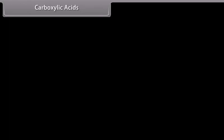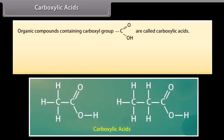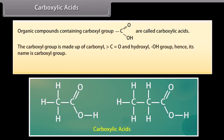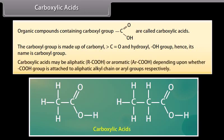Carboxylic acids: organic compounds containing a carboxyl group are called carboxylic acids. The carboxyl group is made up of a carbonyl group and a hydroxyl group, hence its name is carboxyl group. Carboxylic acids may be aliphatic or aromatic depending upon whether the carboxyl group is attached to an aliphatic alkyl chain or aryl groups respectively.